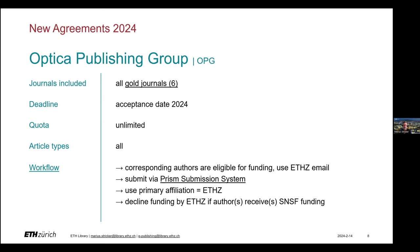As with ASME, we have a new contract with Optica, which allows all ETH members to publish free in its gold journal portfolio. Optica runs the Prism submission system where you have to enter ETH as your primary affiliation. Should you or one of your co-authors have an SNSF grant, please decline funding by ETH and generate an invoice instead that can be uploaded directly to SNSF Chronos Hub to have your article paid for.